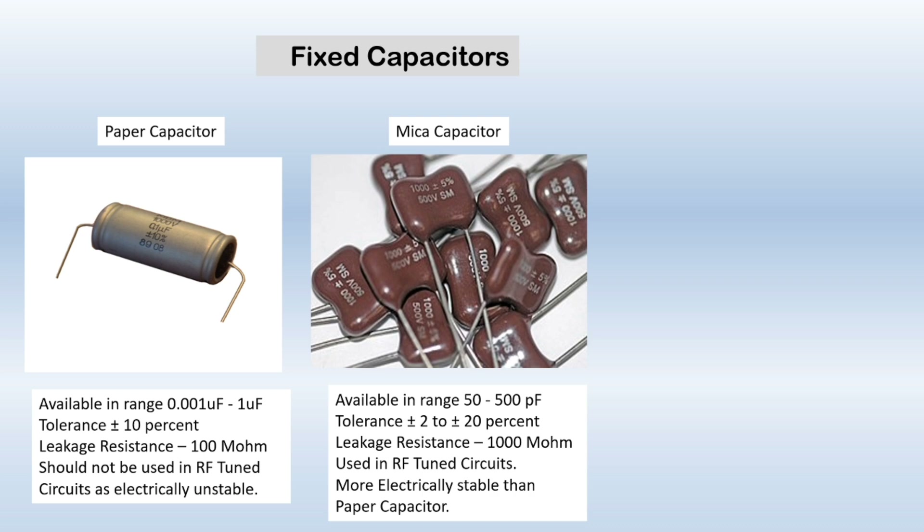Next we have mica capacitor. It consists of alternate thin sheets of metal foil and mica. It is available in the range of 50 to 500 pF and its tolerance is from plus or minus 2% to plus or minus 20%. It has a leakage resistance of 1000 megaohms, and as it is electrically stable it can be used in RF tuned circuits.